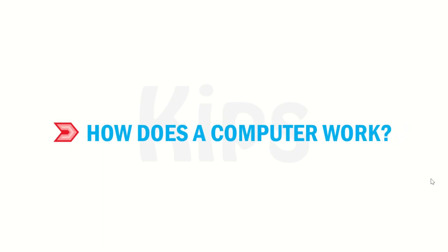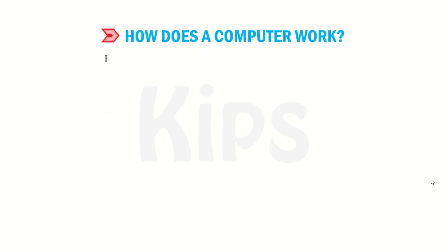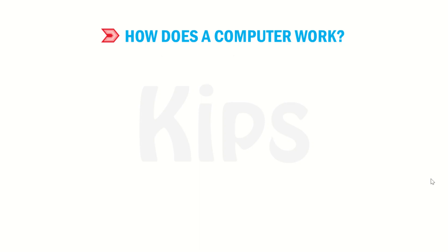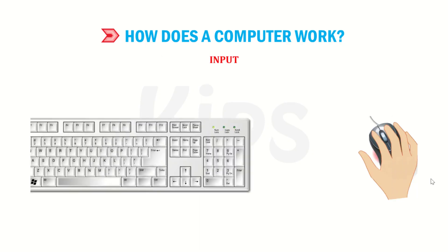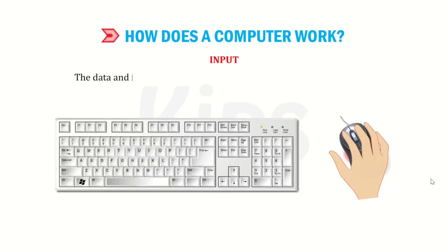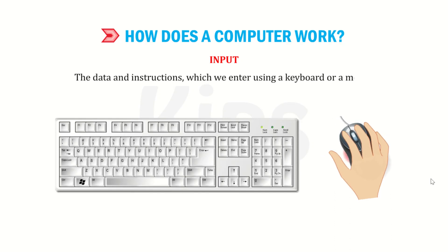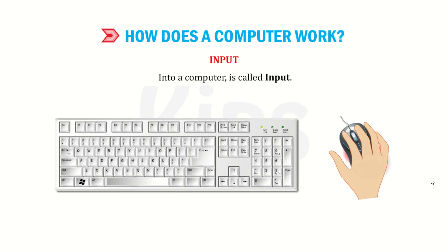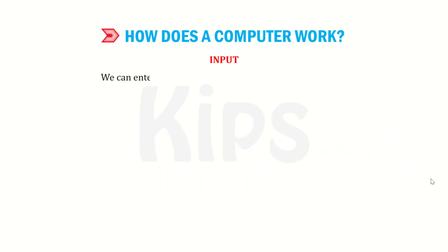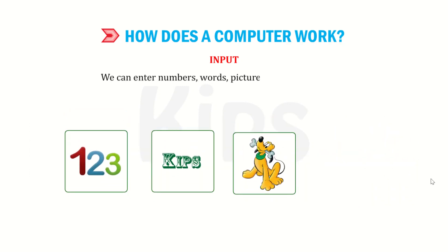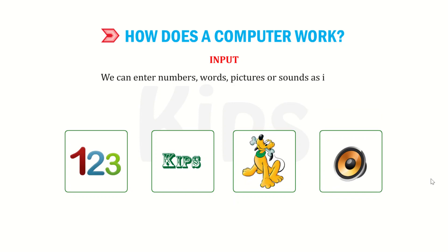Students, let us learn about how a computer works. Every computer goes through the following three stages. The data and instructions which we enter using a keyboard or a mouse into a computer is called input. We can enter numbers, words, pictures, or sounds as input.